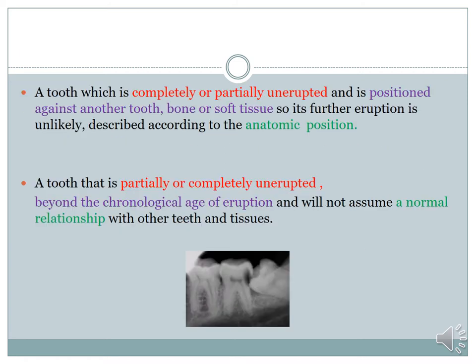So what is an impacted tooth? An impacted tooth is the one which is completely or partially unerupted and is positioned against another tooth, bone, or soft tissue, so its further eruption is unlikely, describing according to its anatomic position. A tooth that is partially or completely unerupted beyond the chronological age of eruption and will not assume a normal relationship with other teeth and tissues is an impacted tooth.